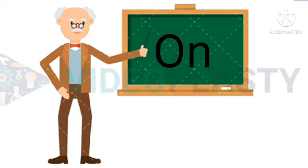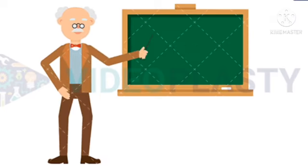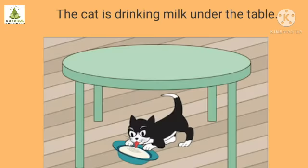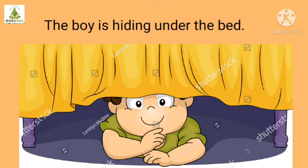Okay. Now we will go on to the next preposition, and it is 'under'. Tiger is sitting under a tree. Where can you see a tiger sitting? Under a tree. Cat is drinking milk under the table. Where is cat drinking milk? She is drinking milk under the table. Boy is hiding under the bed. Where is the boy hiding? Under the bed.